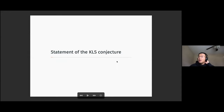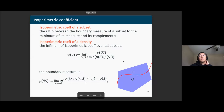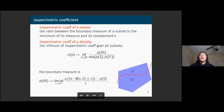So the KLS conjecture is about the isoperimetric coefficient of a log-concave density. The isoperimetric coefficient of a density is the infimum over all isoperimetric coefficients of a subset — defined as the boundary measure divided by the volume of the subset S. You go through all the subsets of our d-dimensional space and take the ratio of the boundary measure with the minimum of volume S and S complement to get the isoperimetric coefficient.